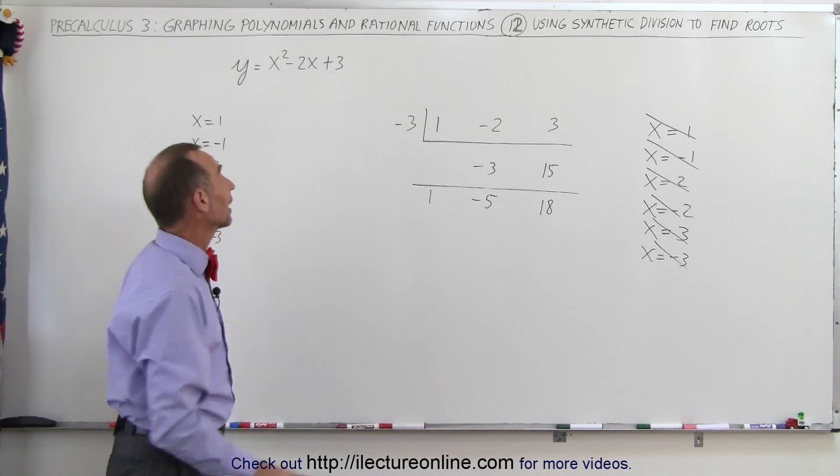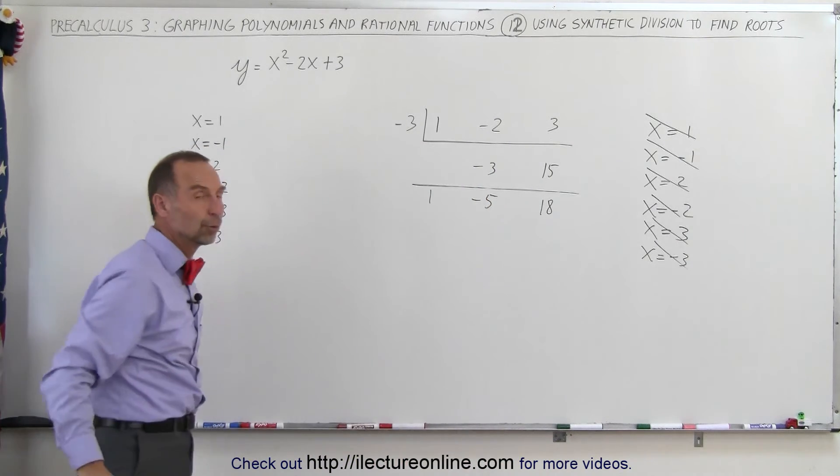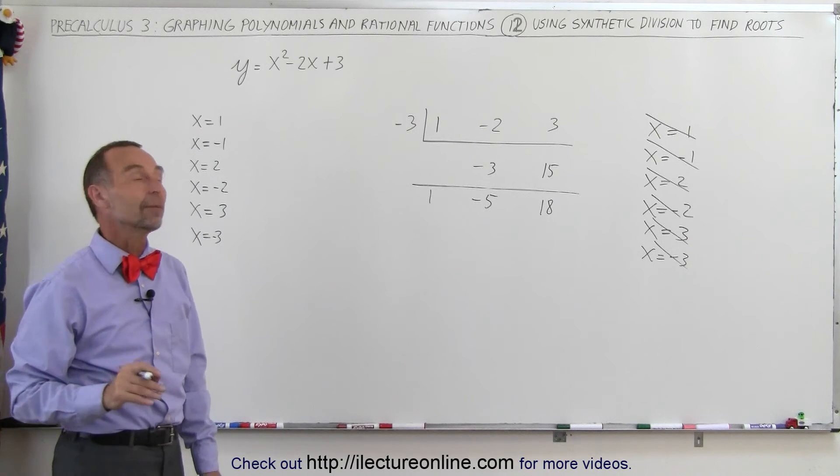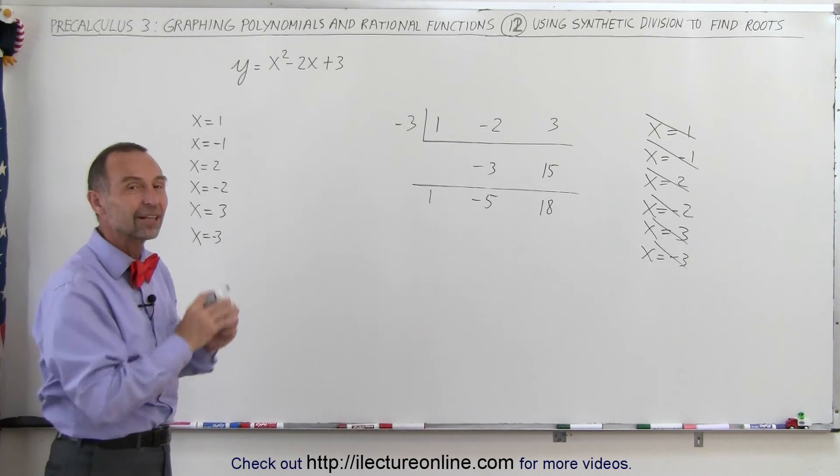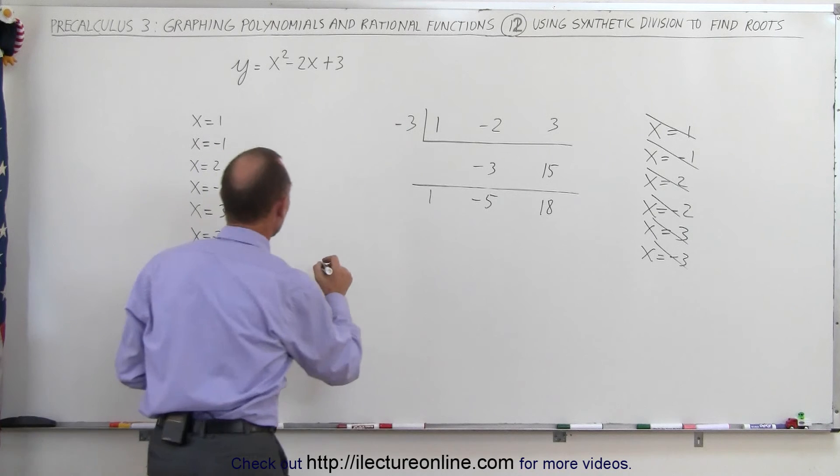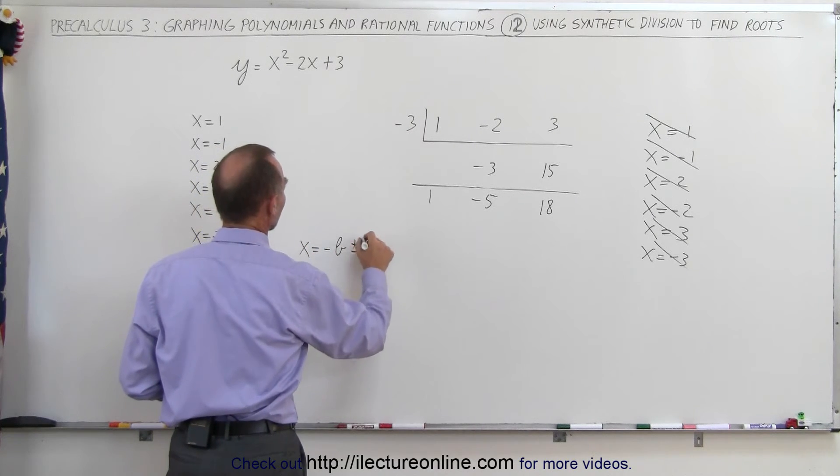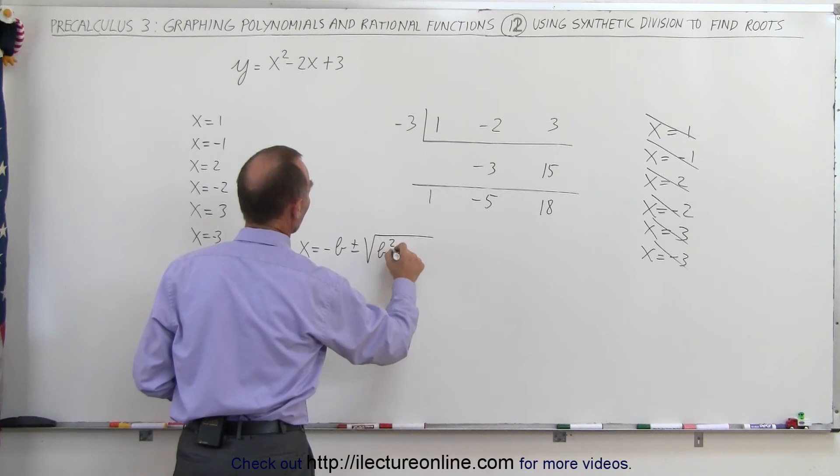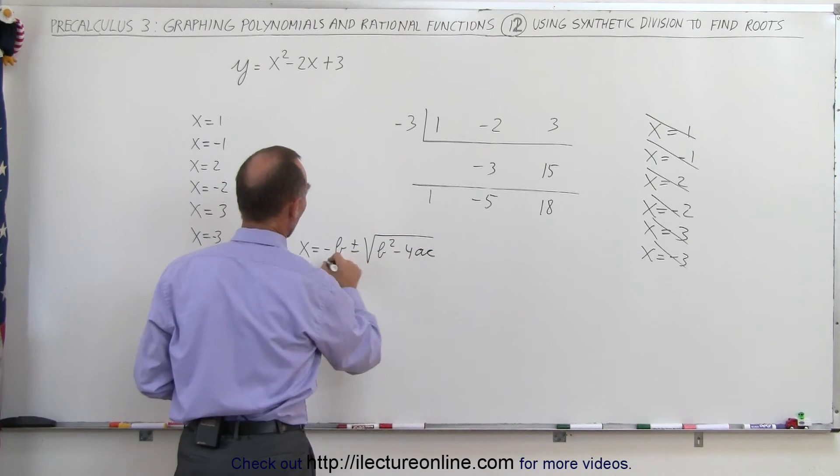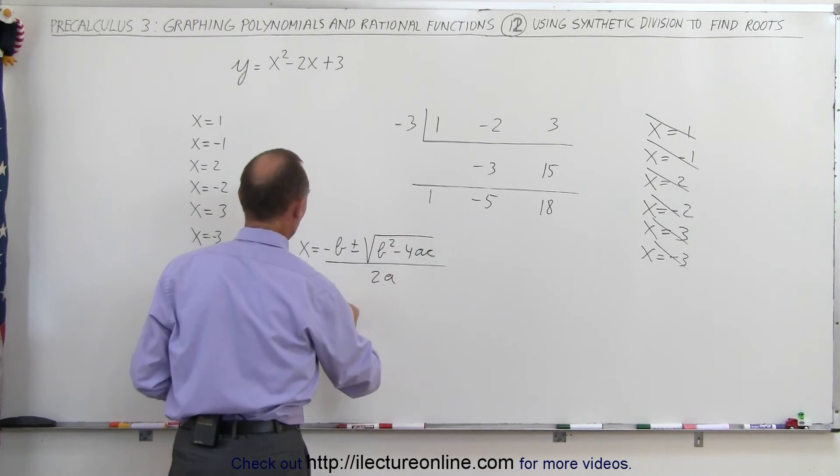I must conclude that this equation does not have a root. We can find out real quick by using the quadratic formula to see if our synthetic division worked for us the way it should. And so when we say that x is equal to minus b plus or minus the square root of b squared minus 4ac all divided by 2a, and we plug in some numbers.